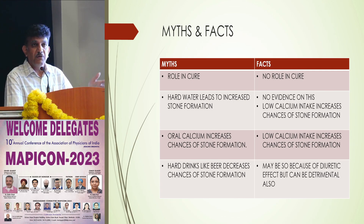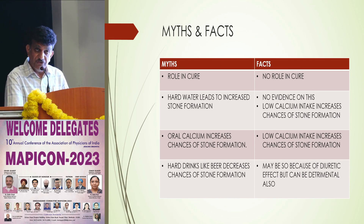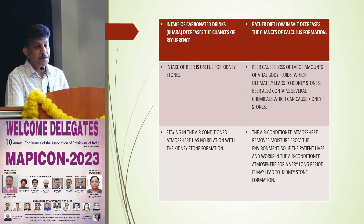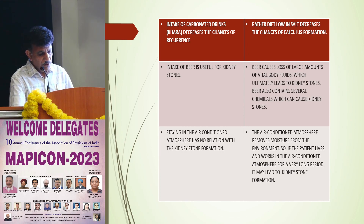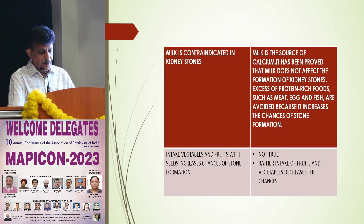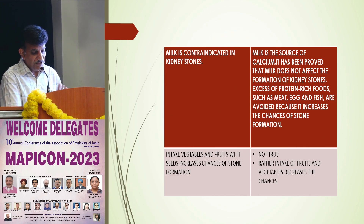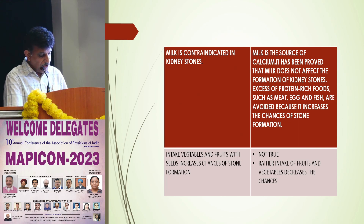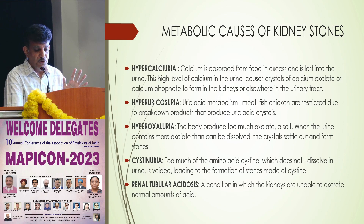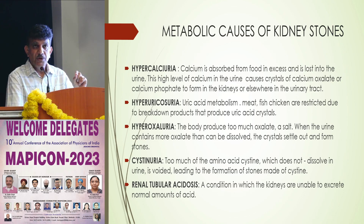Can beer or alcohol flush out stones? The answer is no — it's just a myth. Beer can cause some diuresis leading to more urine, but not stone removal. The main dietary emphasis for prevention should be on taking lots of vegetables, fresh fruits, and high-fiber diet — these are the things that can help prevent recurrence.